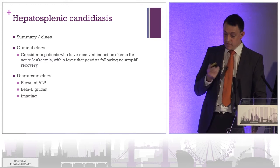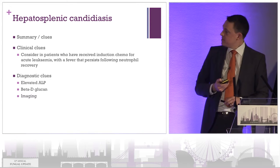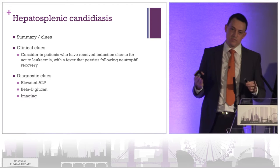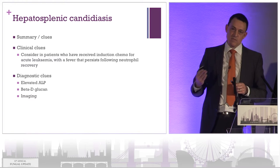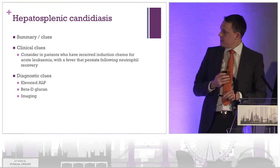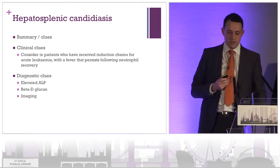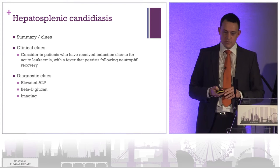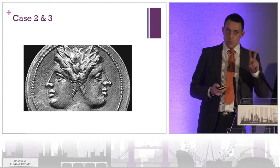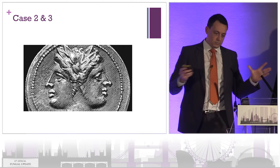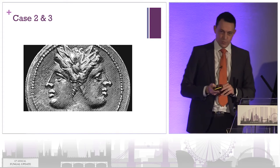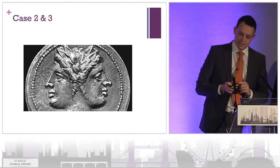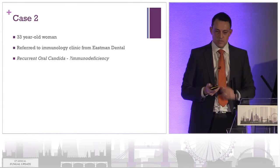In summary for this case: think about disseminated candidiasis in patients who have been on treatment for acute leukaemia, whose counts have recovered, who have a prolonged fever, and who have an elevated alkaline phosphatase. Think about doing a beta-D-glucan and some imaging. An interesting case — I've got two more quick cases that are similar but slightly different.